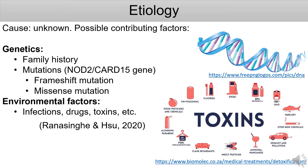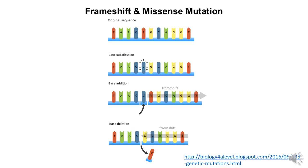The environmental factors are infections, drugs, and toxins. On the top, we have the original DNA sequence. Missense mutation is when there is base substitution — the T base pair is being replaced with a C base pair. Frameshift mutation is when you either add or delete a base pair. These could all alter the DNA sequence.